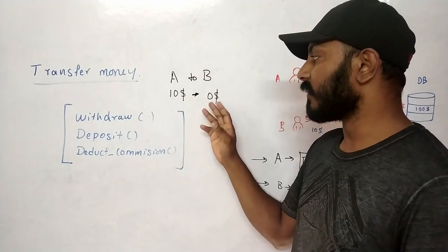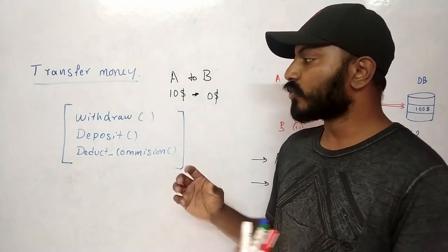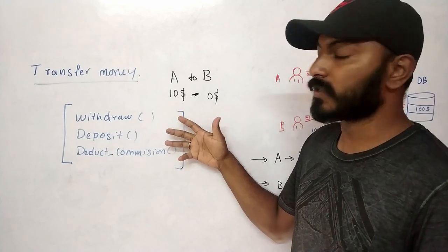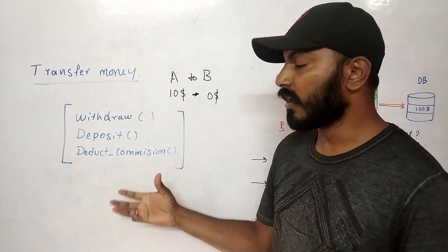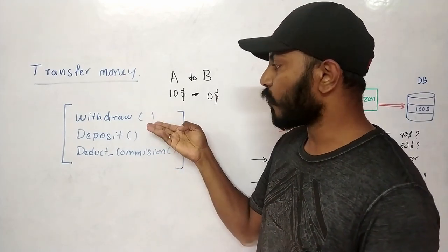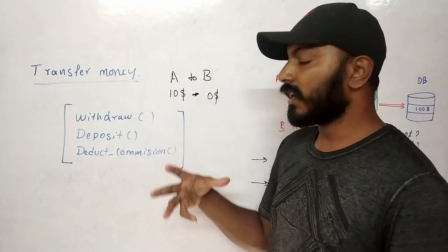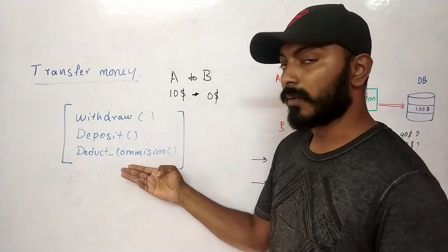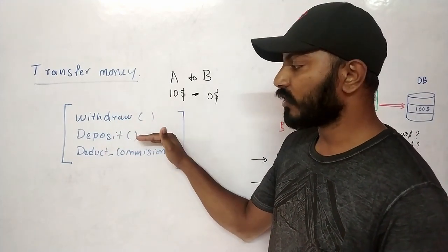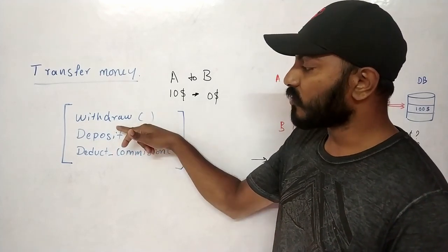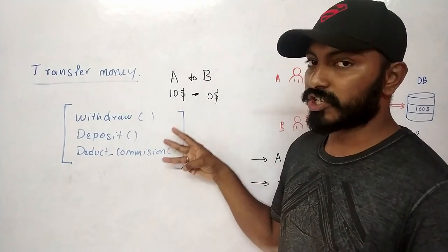There is Person A with $10 and Person B with $0. To perform the transfer properly, there are three essential steps: first, withdraw the specified amount from the source account A; second, deposit it into account B; and third, deduct a commission. This order is standard — withdraw first, then deposit, with commission in between.